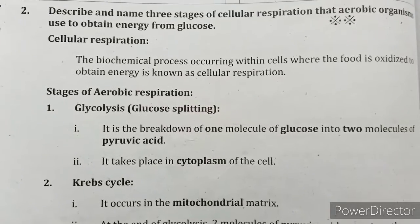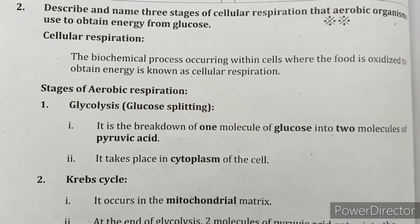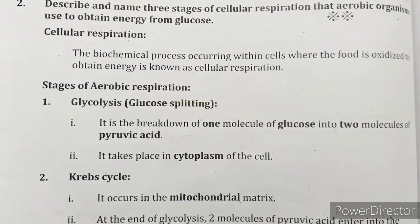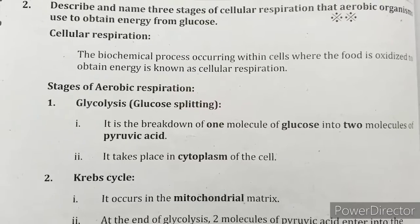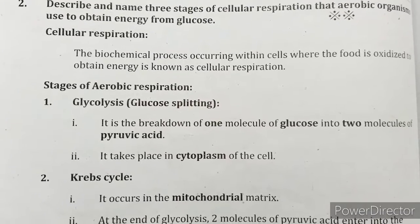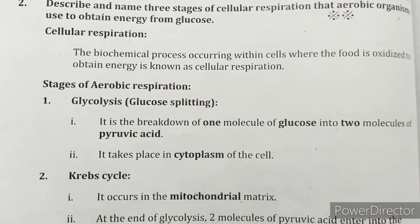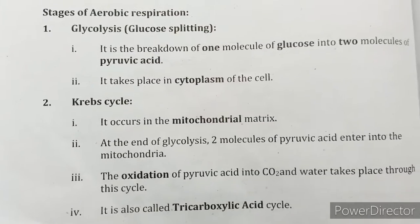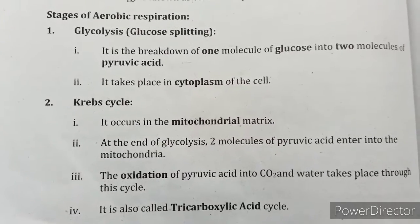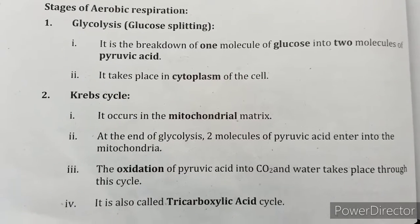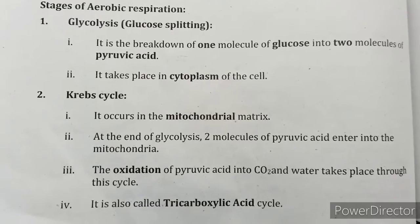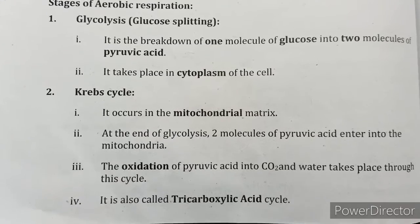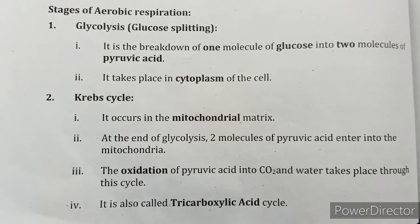Describe and name the three stages of cellular respiration that aerobic organisms use to obtain energy from glucose. Cellular respiration is the biochemical process occurring within cells where food is oxidized to obtain energy. Stage 1 — Glycolysis: it is the breakdown of one molecule of glucose into two molecules of pyruvic acid, and it takes place in the cytoplasm of the cell.